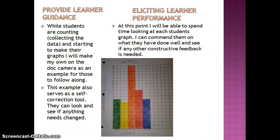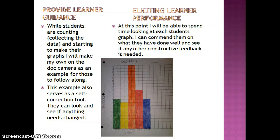In providing learner guidance while we're working on this activity — while they're starting to count their Skittles and collect their data — I'll go ahead and do the same thing on a document camera so that they can see the steps as they're doing them. Some will choose to follow along, some will move ahead at their own pace. This example also serves as a self-correction tool — if they look up and see they haven't done something or they've done something incorrectly, they can go ahead and change it.